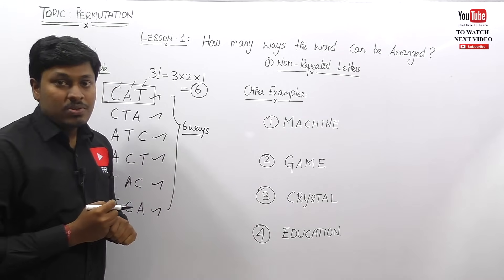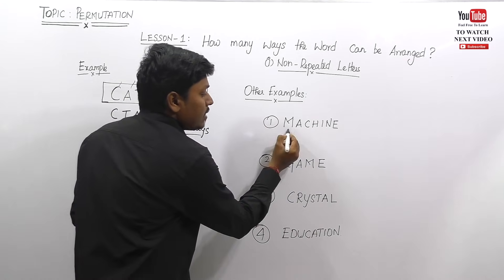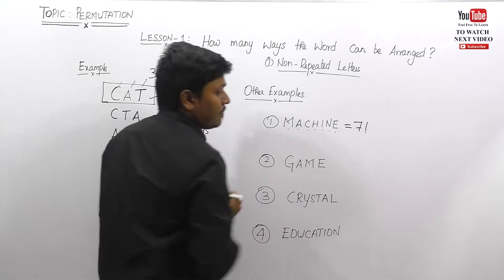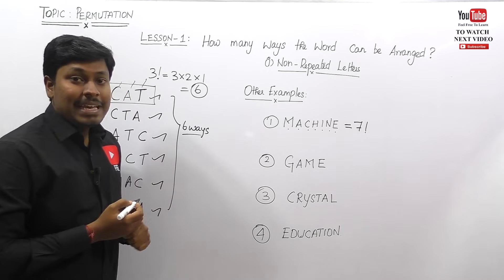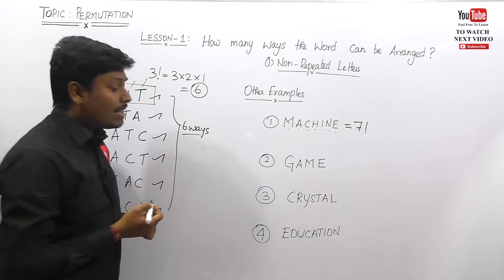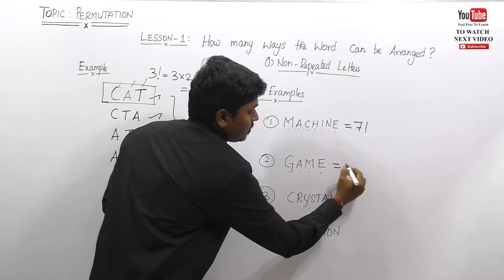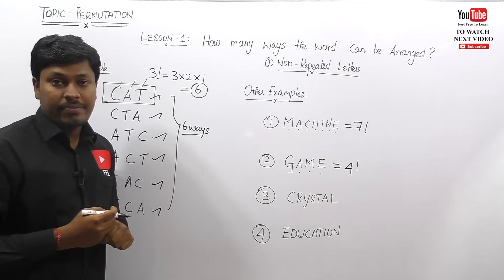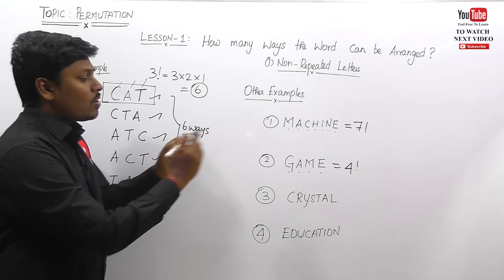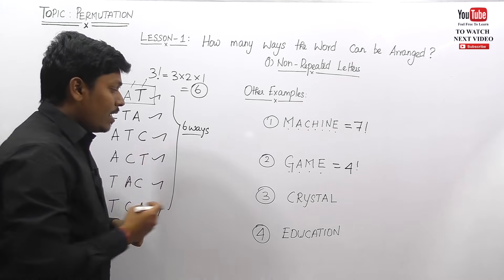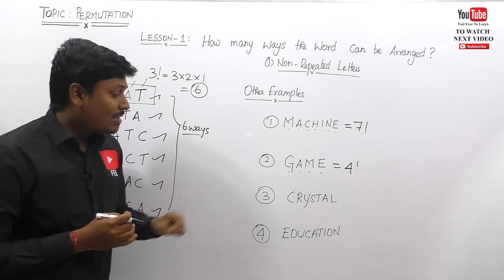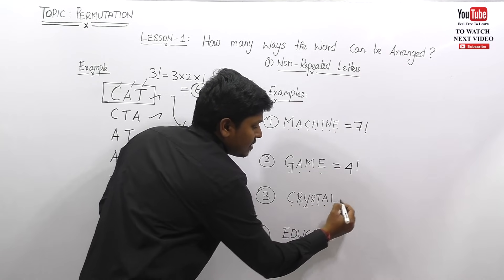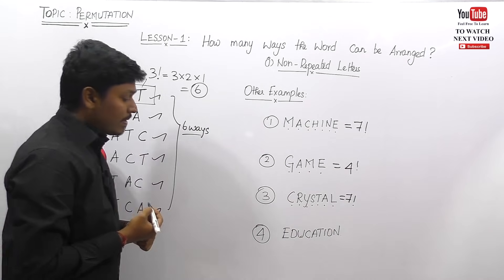Let's see some examples. First example: how many ways can the word MISSION be arranged? Count the letters — one, two, three, four, five, six, seven — so the answer is seven factorial. Second example: how many ways can the word GAME be arranged? Count the letters — one, two, three, four — so this is four factorial, which equals 4 × 3 × 2 × 1 = 24. Third example: how many ways can the word CRYSTAL be arranged? Count the letters — one, two, three, four, five, six, seven — so the answer is seven factorial.